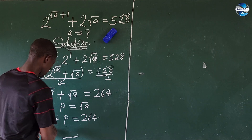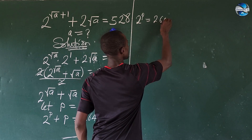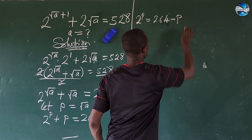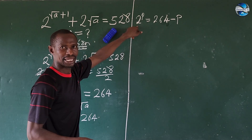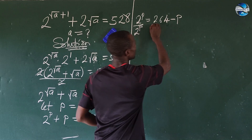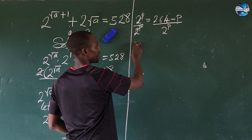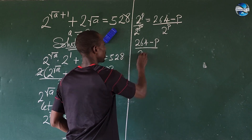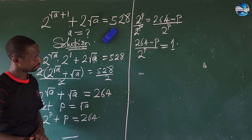Moving the term over, we are left with 2 to the power of p, equal to 264 minus p. Next, we make the left-hand side unity by dividing through by 2 to the power of p, giving us (264 minus p) over 2 to the power of p, equal to 1.